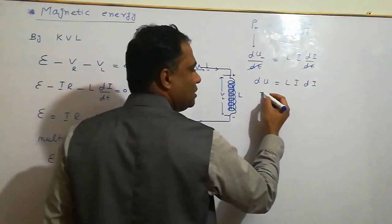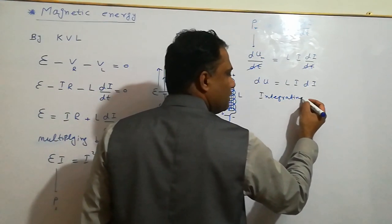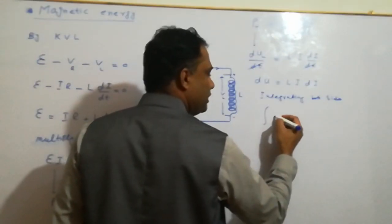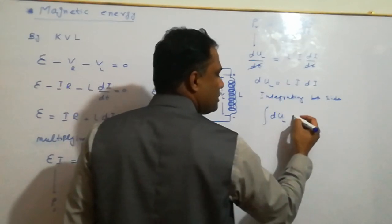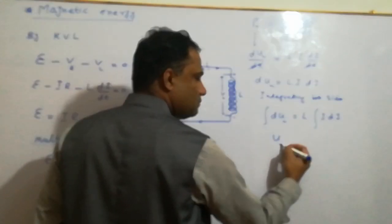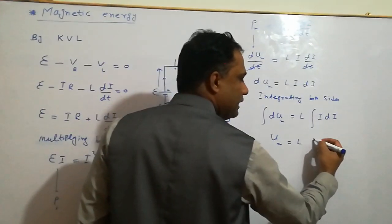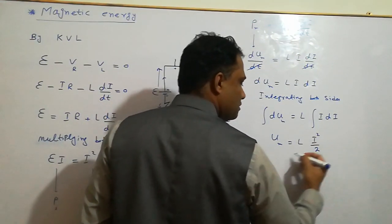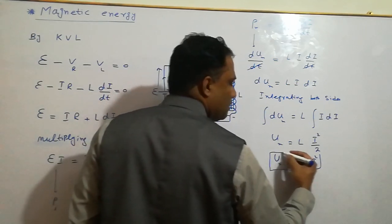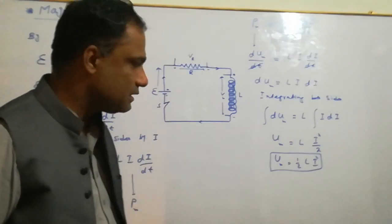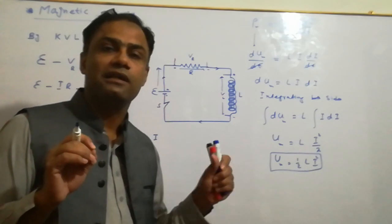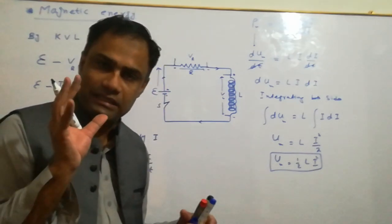Integrating both sides: the integral of dU equals L times the integral of I dI. This gives Um equal to L times I squared over 2, so Um equals one-half L I squared. This is the energy stored in the inductor in the form of a magnetic field.